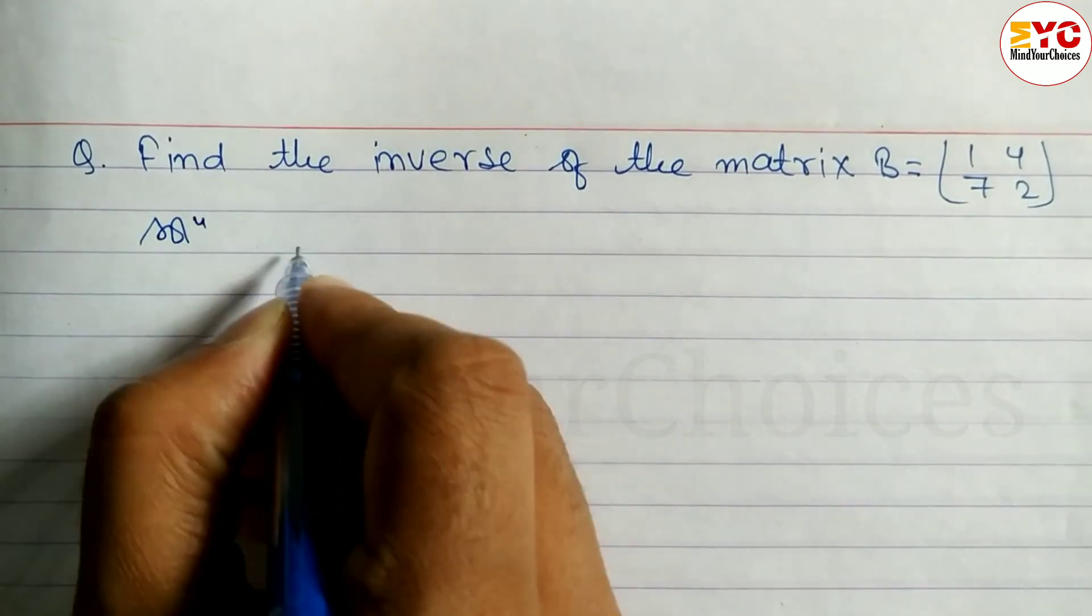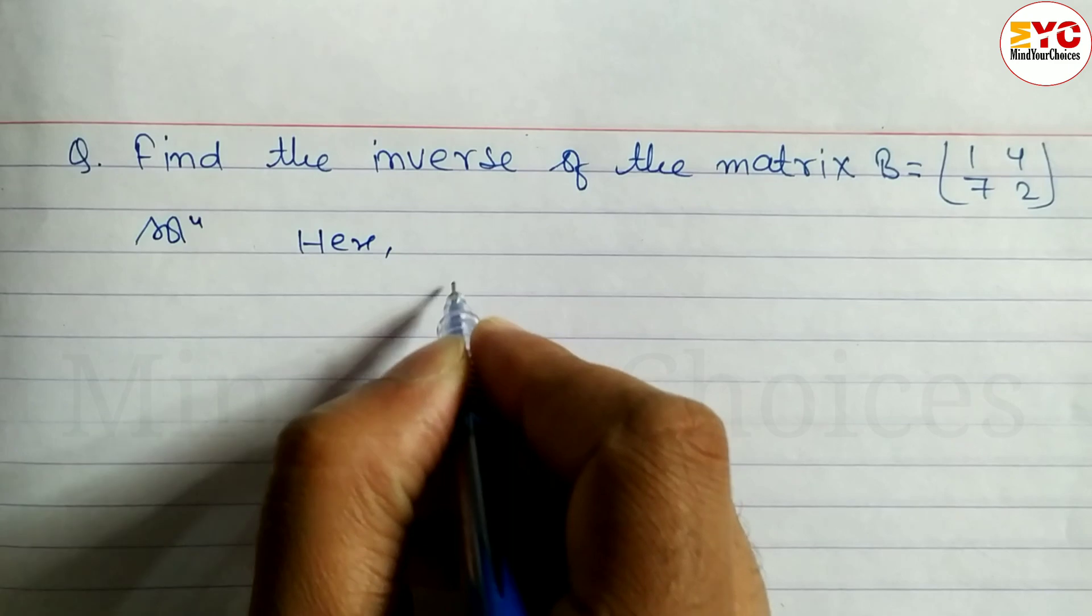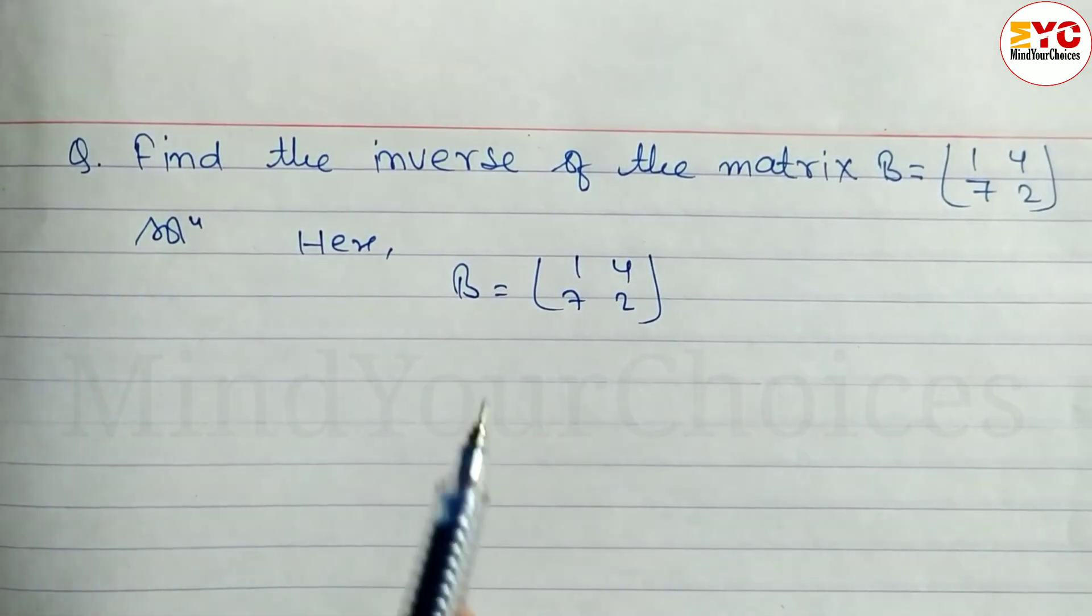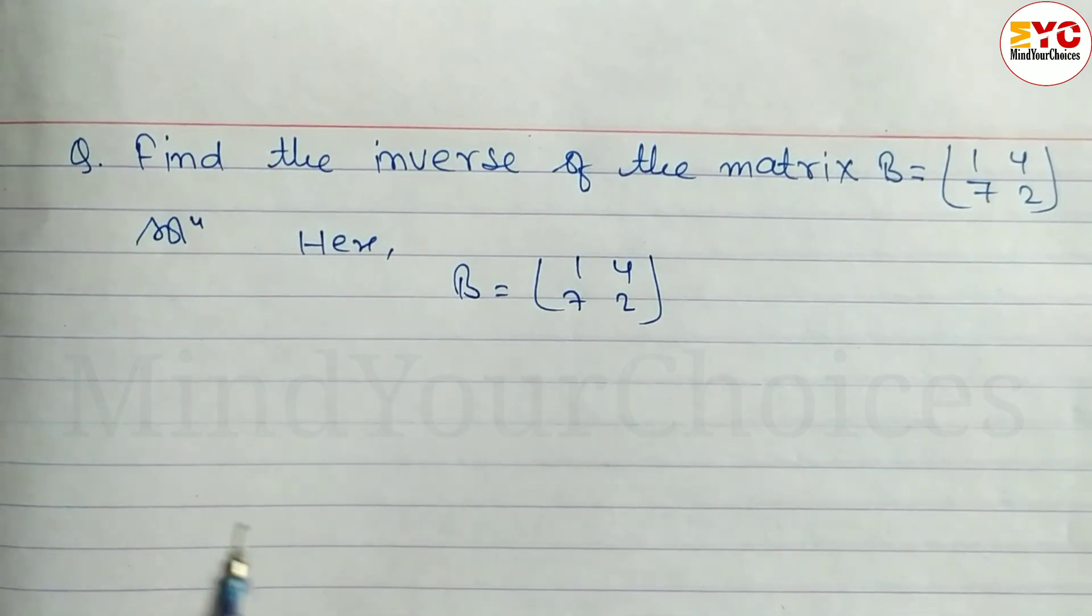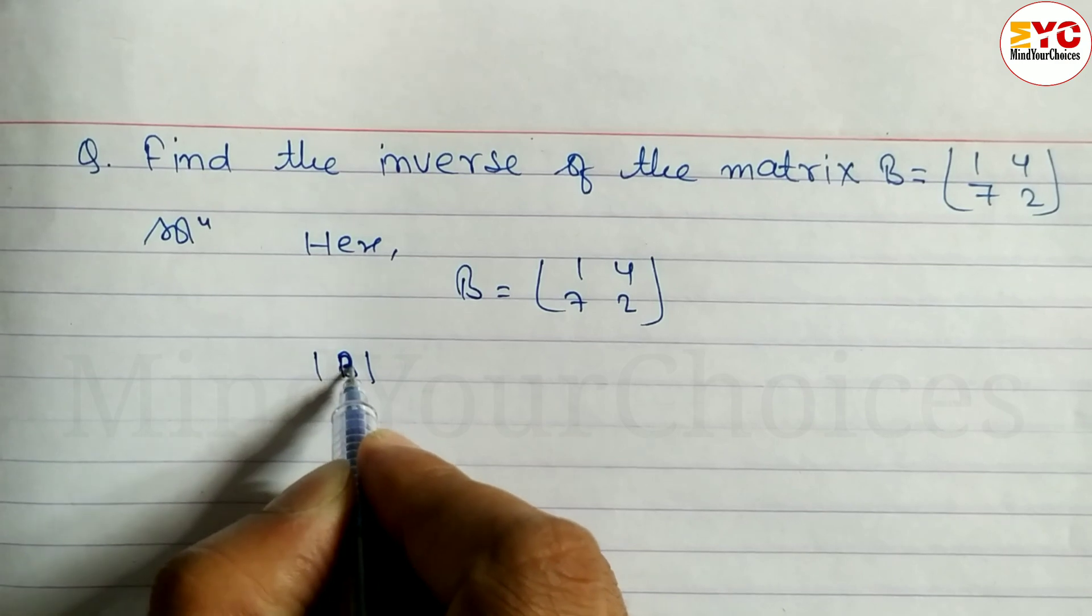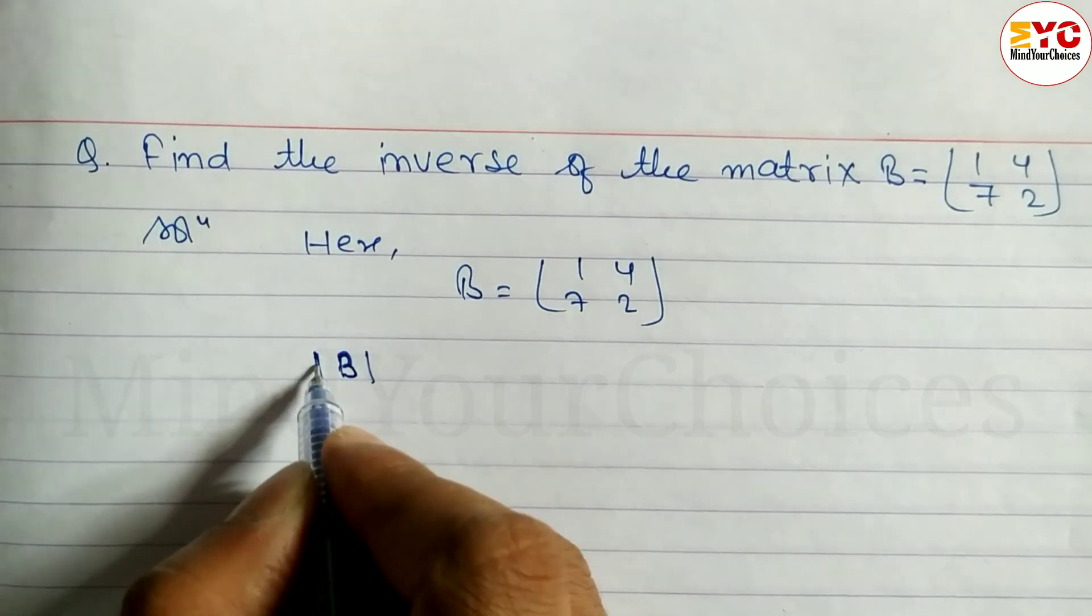Let's take a start. Matrix B is given as [1 4; 7 2]. To find the inverse of any matrix, first we have to find the determinant of that matrix to check whether it is singular or non-singular.